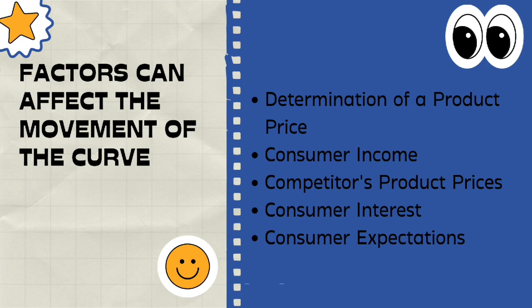The fourth factor is consumer interest. The interest of consumers may change from time to time due to new trends, new products, etc., so that the same product may no longer attract the market. The fifth factor is consumer expectation. The expectation of consumers can affect changes in the demand curve, causing sudden increases and decreases in the demand for goods.